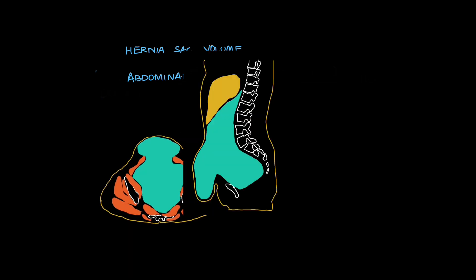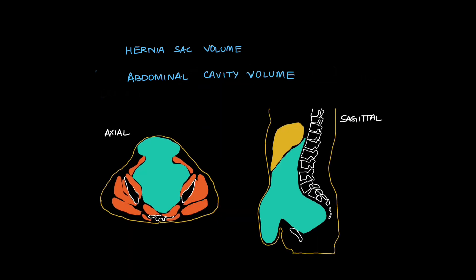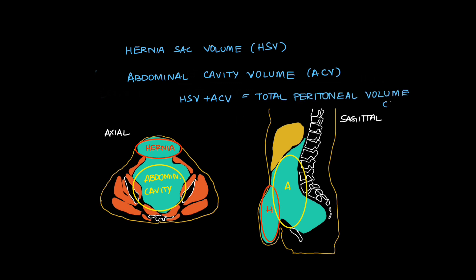To calculate loss of domain we need two volumes: hernia sac volume and remnant abdominal cavity volume. On axial and sagittal sections, the hernia sac is considered as an ellipse and its volume is calculated. The remnant abdominal cavity is considered as another ellipse and its volume can be calculated. Hernia sac volume plus abdominal cavity volume gives us the total peritoneal volume.